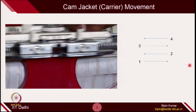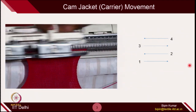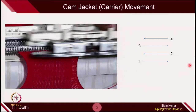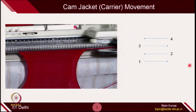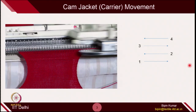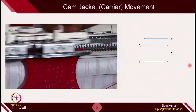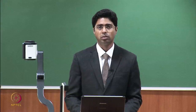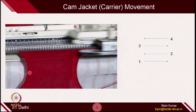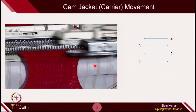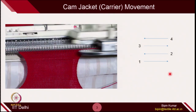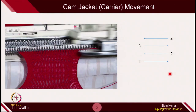For each direction of cam jacket movement, we have to specify whether it is making loop stitches, tuck stitches, or float stitches. In the fabric notation, you also have to carefully indicate the direction of carriage movement — the carriage takes the cams from left to right or right to left — and that direction of motion is very, very important.